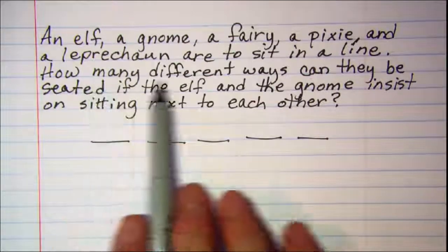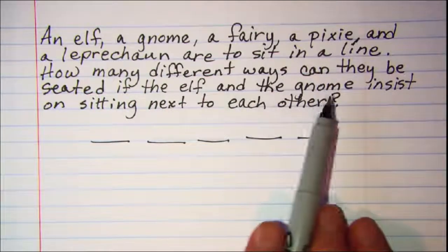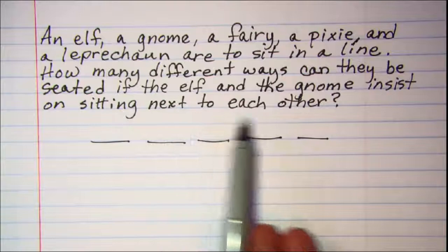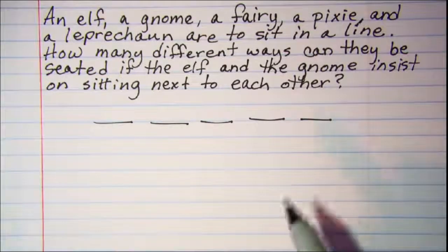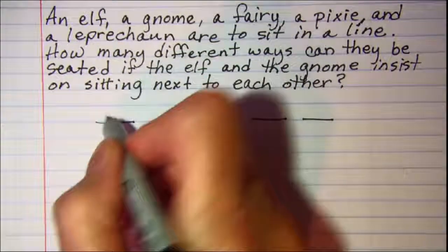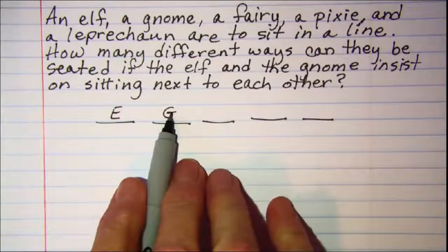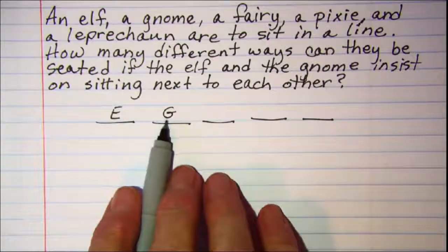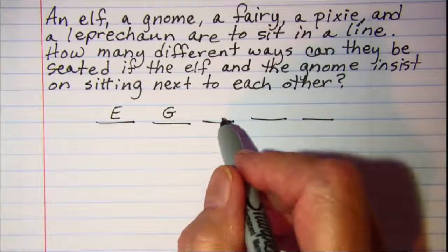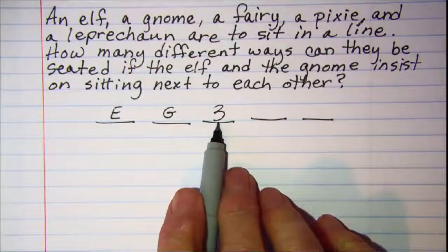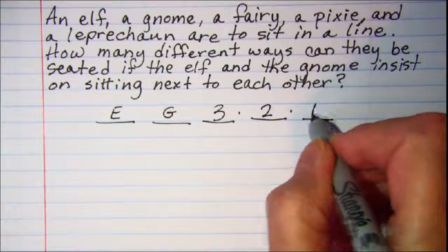Our question is how many different ways can they be seated if the elf and the gnome insist on sitting next to each other? So we're going to need to do those separately. If we put our elf and our gnome in these two positions, and there's only one way to pick an elf and one way to pick a gnome, then we have three more persons to choose from for this spot, and then two more for this spot, and one more for this spot.